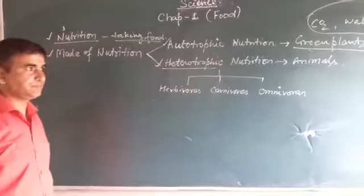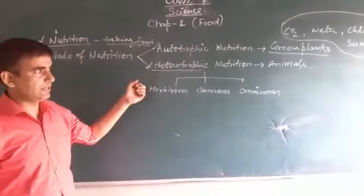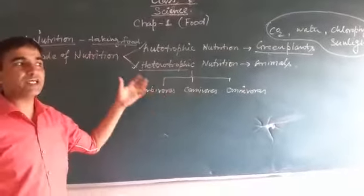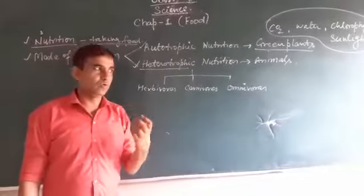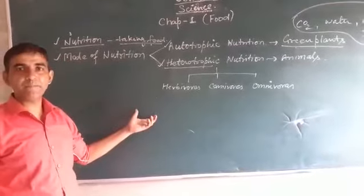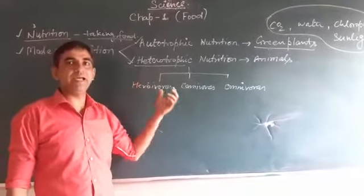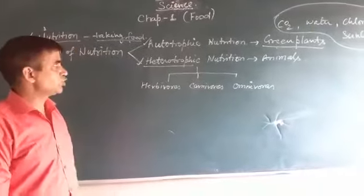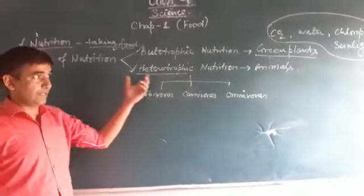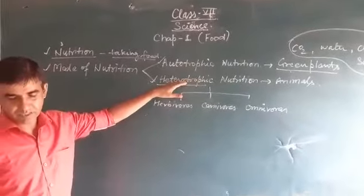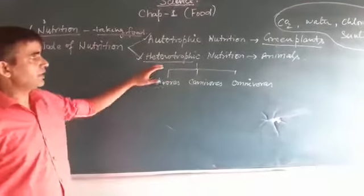Now, heterotrophic nutrition. You may have seen that some animals and we human beings depend on plants or other small animals for our food. We get some food from plants like rice, wheat, vegetables, and fruits, and some like milk and eggs from animals. So, the mode of nutrition in which organisms depend on other animals and plants is called heterotrophic nutrition.